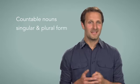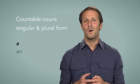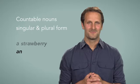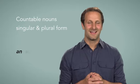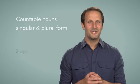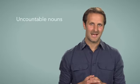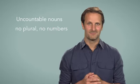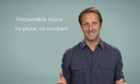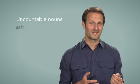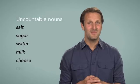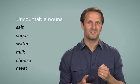A strawberry, five strawberries. An apple, two apples. Uncountable nouns don't have plural forms and you don't use numbers with them because normally you can't count them. Salt, sugar, water, milk, cheese, and meat are uncountable nouns.